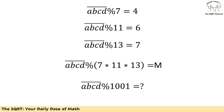Here we have the remainders for 7, 11, and 13. Since 7, 11, and 13 are pairwise co-prime, we are going to find the remainder of the four-digit number when divided by 7 times 11 times 13. If you calculate 7 times 11 times 13 you get 1001. So we need to find the remainder of the four-digit number when divided by 1001, based on the Chinese Remainder Theorem.